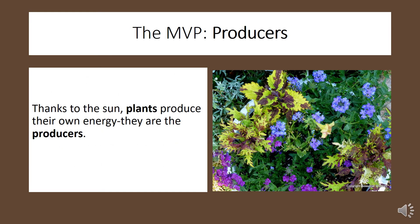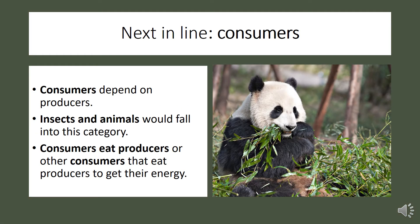Of the three, producers are the most valuable player. Remember back in the video about plant and animal cell processes — thanks to the sun, plants produce their own energy, that's why we call them producers. Consumers depend on producers and include things like insects and animals. Even if an animal doesn't eat plants, it eats insects or other animals that have eaten plants. Without producers there'd be no consumers, which means there'd be no us.